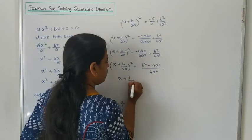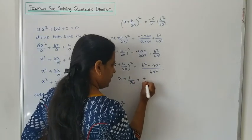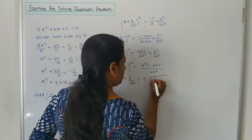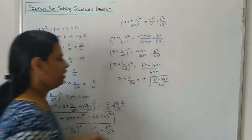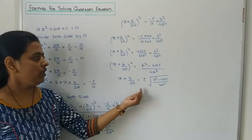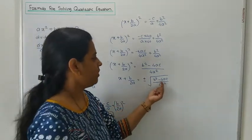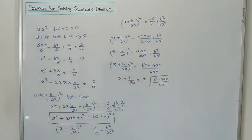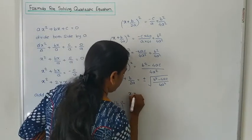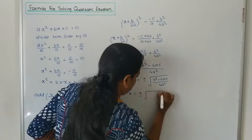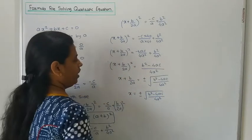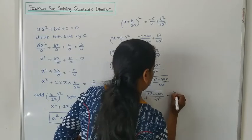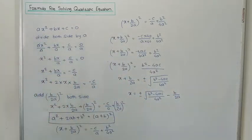Therefore, X + B/2A = ±√[(B² - 4AC) / 4A²]. Understand this? X + B/2A = ±√(B² - 4AC) / 4A². Now, changing the side, the value of X is: X = ±√(B² - 4AC) / 4A² minus B/2A. So, X = ±√(B² - 4AC) / 4A² - B/2A.